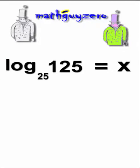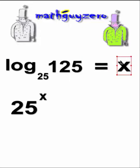So let's make it equal x. Now we know to put it back into the exponential equation format. The base 25 raised to the exponent x equals - you should know this by now, the big number - 125.